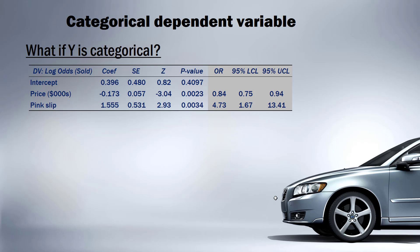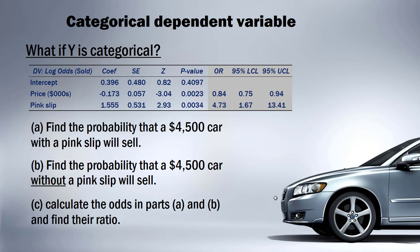Here's that output from the regression. There are three practice questions: Part A asks for the probability that a $4,500 car with a pink slip will sell; Part B asks for the same car without a pink slip; and Part C asks you to calculate the odds of each of those cars selling and find the odds ratio between the two. Pause the video and give that a go — all the information you need is in the table.